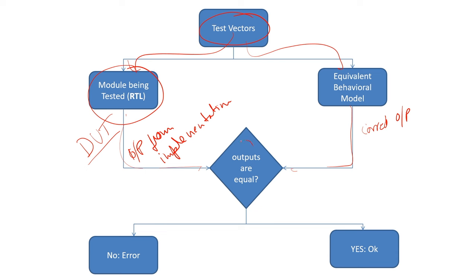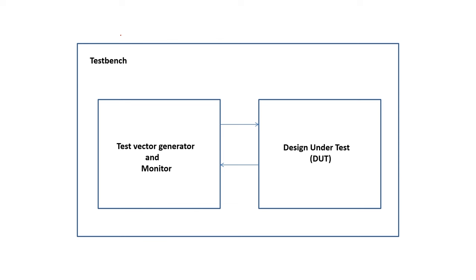You just compare whether the outputs are equal or not. If for all test cases this passes, you will say you are confident the implementation is working fine. If not, there are some bugs and you have to fix them and redo the whole process. So now I will talk about how to write this overall framework — that is what is called test bench writing.